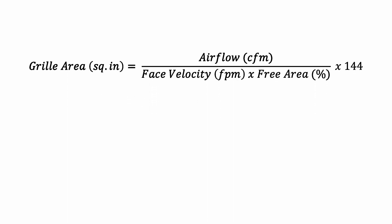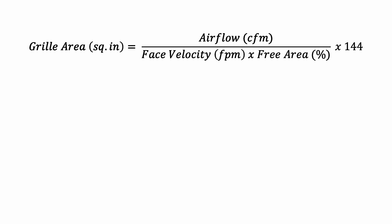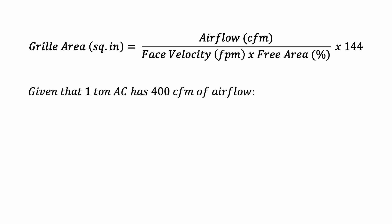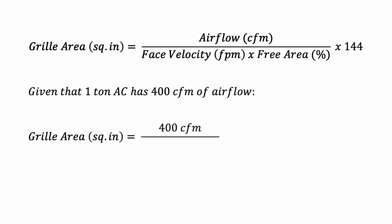Let's look at one example. Assume that we have a 1-ton HVAC system. Using the rule of thumb, 1 ton equals 400 CFM. So, grill area equals 400 CFM divided by a standard face velocity of 500 feet per minute, multiplied by a typical grill free area of 70%, and then multiplied by 144.